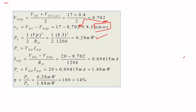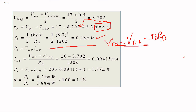Now I want to find the source power, that is VDD times IDQ. IDQ is calculated from VDS equals VDD minus ID times RD, substituting the given values to get 0.0941 to 0.0945 milliamps. Multiplying 20 by that current gives 1.88 milliwatts. Now you know the load power and the source power. Dividing them gives an efficiency of 14 percent.